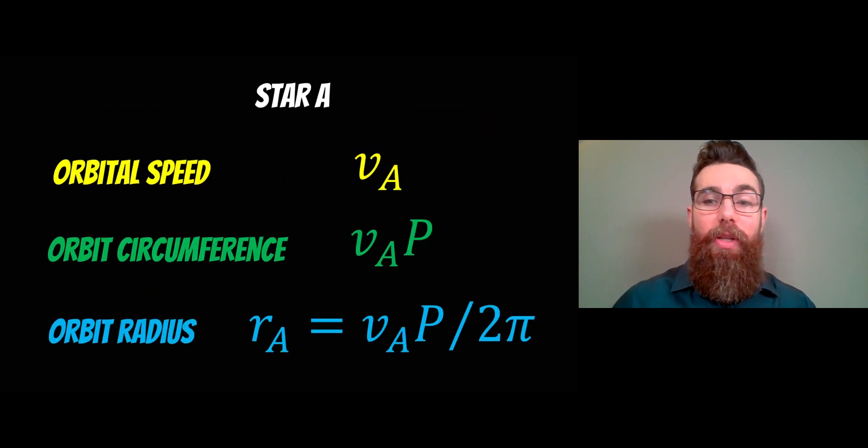We know the orbital speed—we've measured that. We also know the orbit circumference because we know the orbital speed and we know the orbital period P. We can then work out the circumference because we know how fast it's traveling and for how long, so we've got a circumference. From that we can then work out the orbital radius. You've got r_A equals the velocity times the period divided by 2π, which is fairly straightforward to do. It assumes that it's a circular orbit, which is the easiest one to understand.